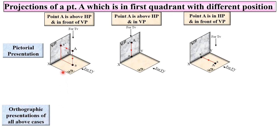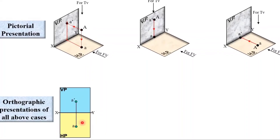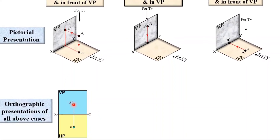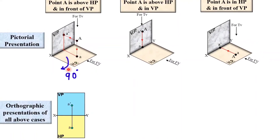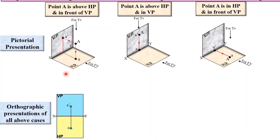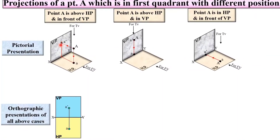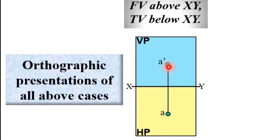Now we are going to see the orthographic presentation of all three cases one by one. For Case 1, first draw the XY line, then locate A dash and A. The horizontal plane always rotates 90 degrees in the clockwise direction, so point A will be below the XY line. Here you can see A point is below the XY line and A dash is above the XY line — front view A dash is above XY, and top view A is below XY.